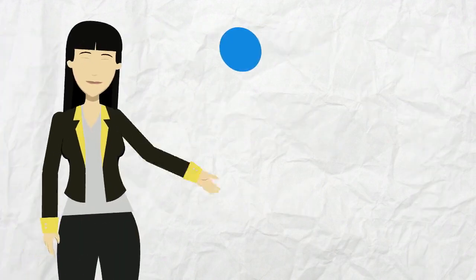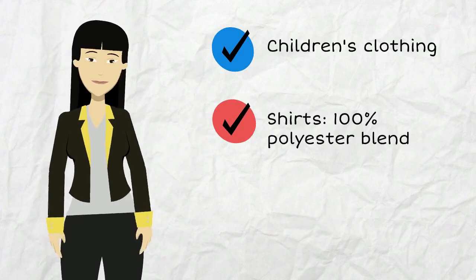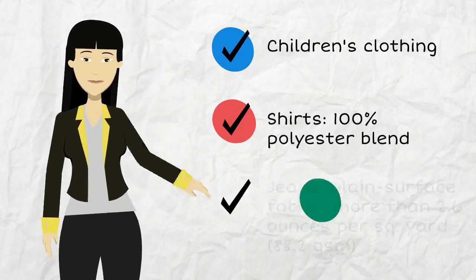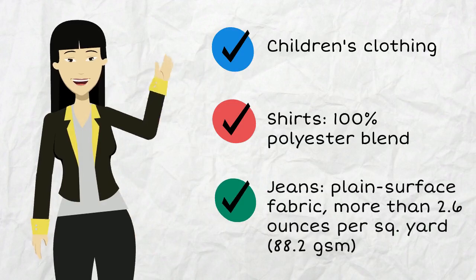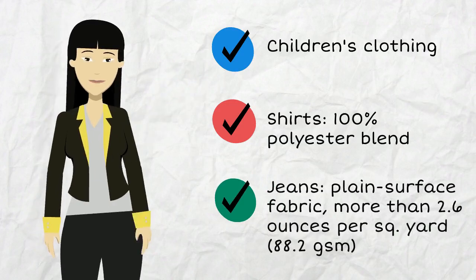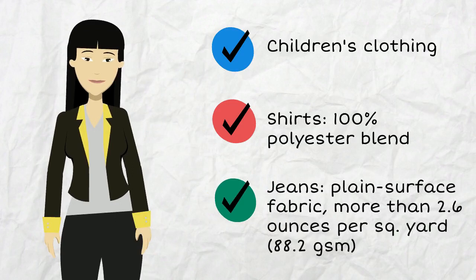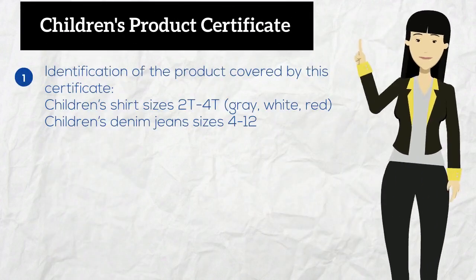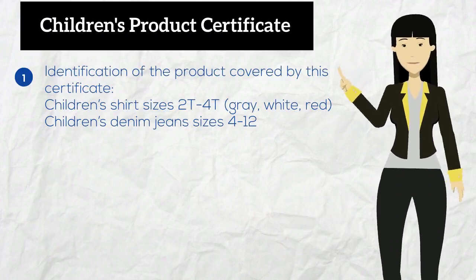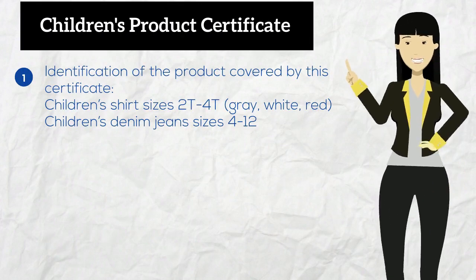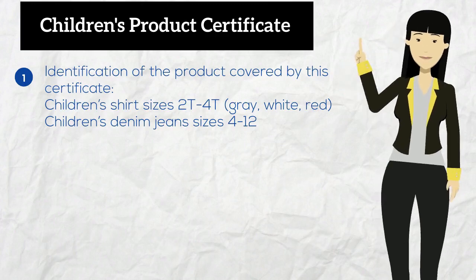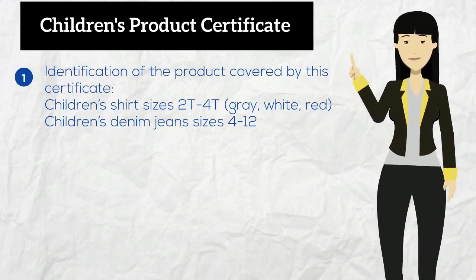In this final example, I produced children's shirts and jeans. My children's shirts are made of 100% polyester blend, and my children's jeans are constructed with plain surface fabric weighing more than 2.6 ounces per square yard, or 88.2 grams per square meter. I describe my products in the first section. I'm creating one CPC for two different products — shirts and jeans — so I need to describe each product with colors and sizing details.